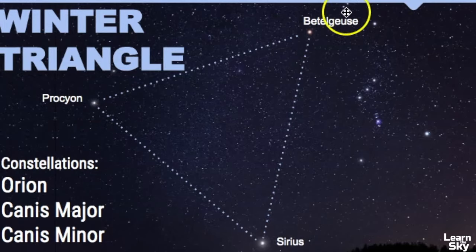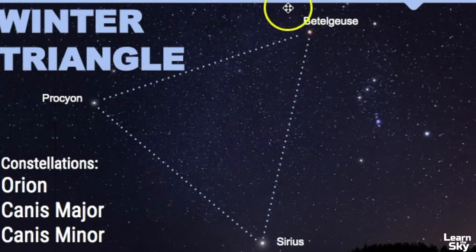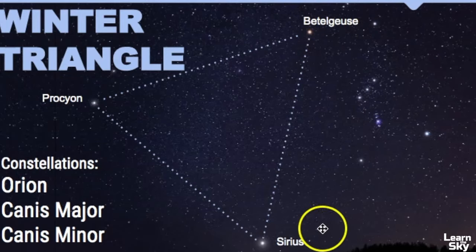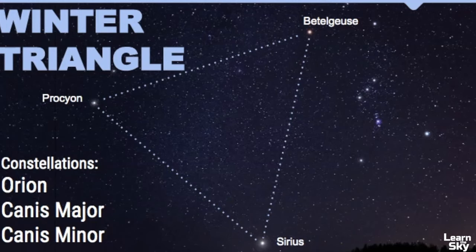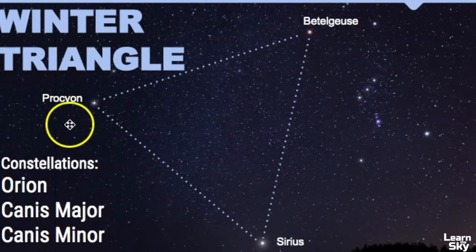We have Betelgeuse, which is part of Orion — sometimes pronounced Betelgeuse — and Sirius right here, the brightest star in the night sky, and then we have Procyon, sometimes pronounced Procyon.